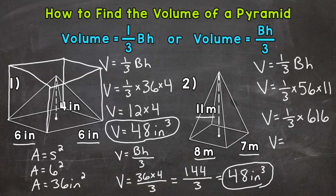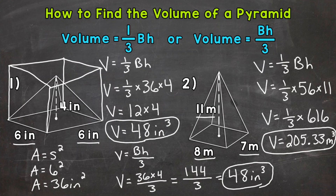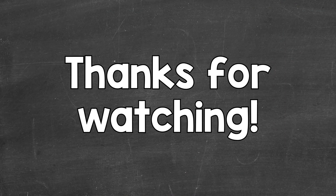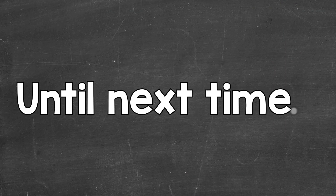1 third times 616 gives us 205.33, rounding to the nearest hundredth. This is cubic meters, so our final answer is 205.33 cubic meters. So there you have it — that's how you find the volume of a pyramid: 1 third times the area of the base times the height, or the area of the base times the height divided by 3. I hope that helped. Thanks so much for watching. Until next time, peace.